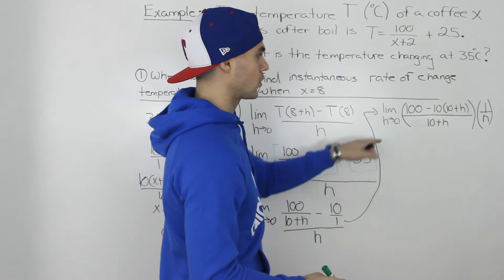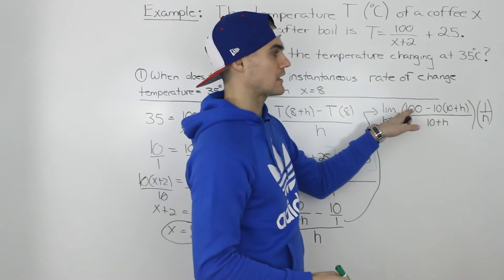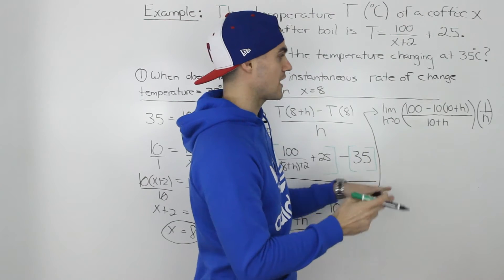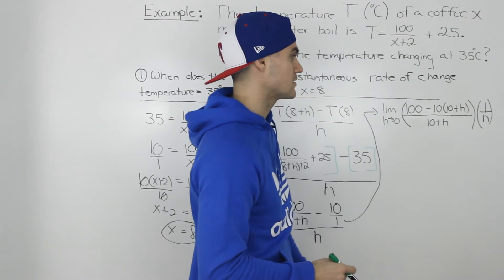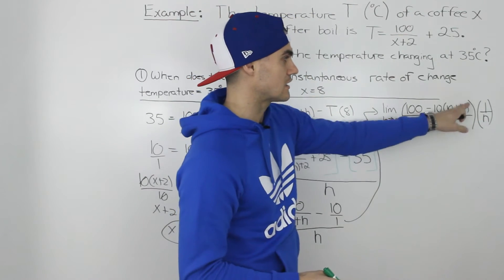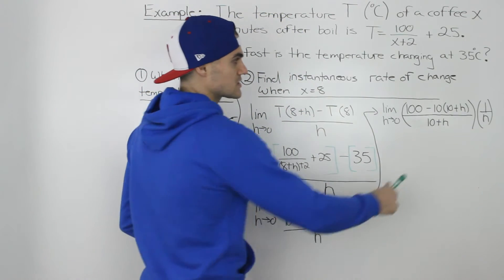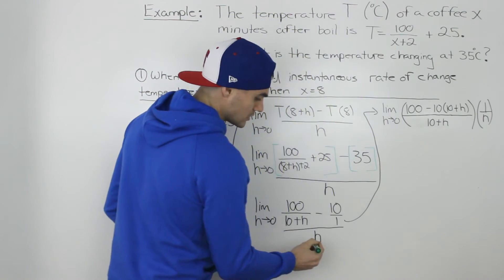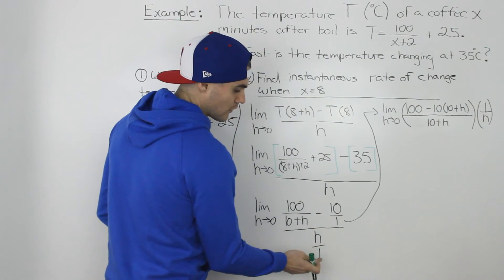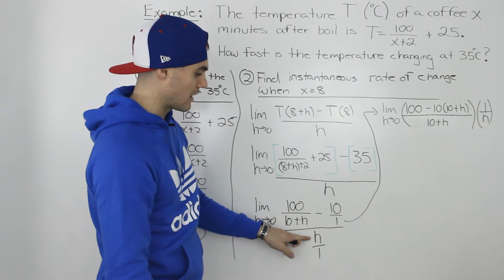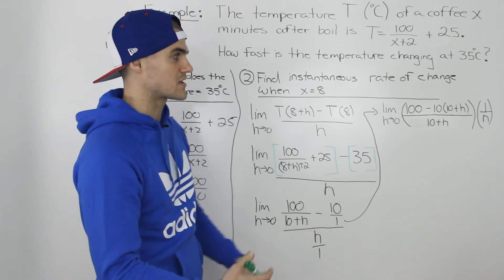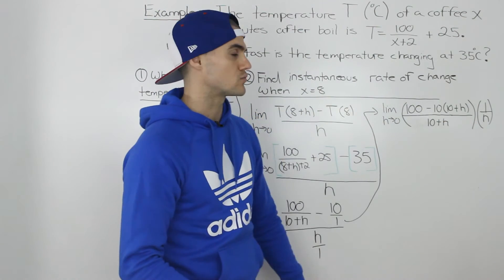Because what's going to happen is we're going to get a term remaining in the numerator that's just in terms of h, and then the h's will cancel out smoothly. And you can see it a lot easier this way versus if we're dividing. And the reason why we can be multiplying by 1 over h, if you remember, we're just dividing another fraction. So when we divide by a fraction h over 1, that's the same as multiplying it by its reciprocal.